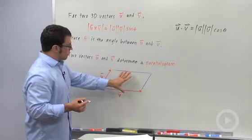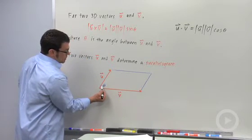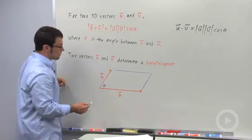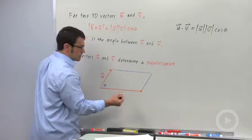And this parallelogram is going to have an area. Now let's say that this is theta, the angle between the two vectors. What would the area be? Well, the area would be the base times the altitude.